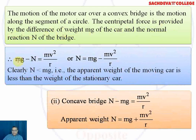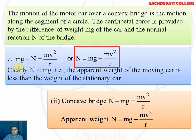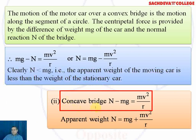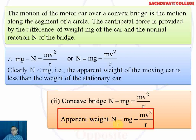For the convex bridge: mg − N = mv² / r, so N = mg − mv²/r. Clearly, normal reaction N is less than mg, meaning the apparent weight of the moving car is less than the weight of the stationary car. For the concave bridge: N − mg = mv² / r, giving apparent weight N = mg + mv²/r, so the car appears heavier on a concave bridge.